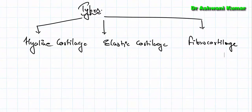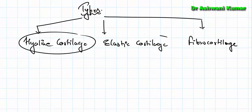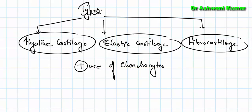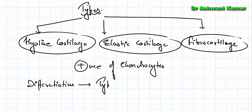What is common to all three cartilage types is the presence of chondrocytes. Chondrocytes are present in all three types of cartilage. The differentiation between all these cartilages is based on the type and amount of fibers present inside.